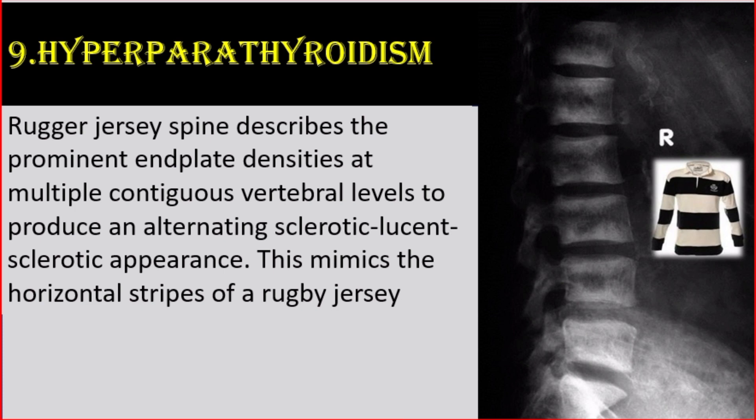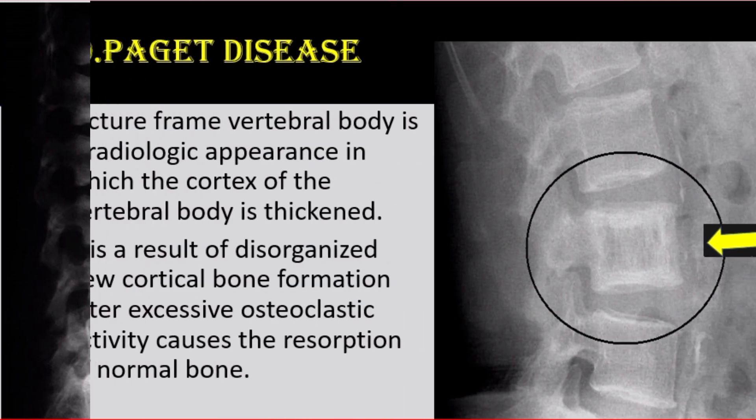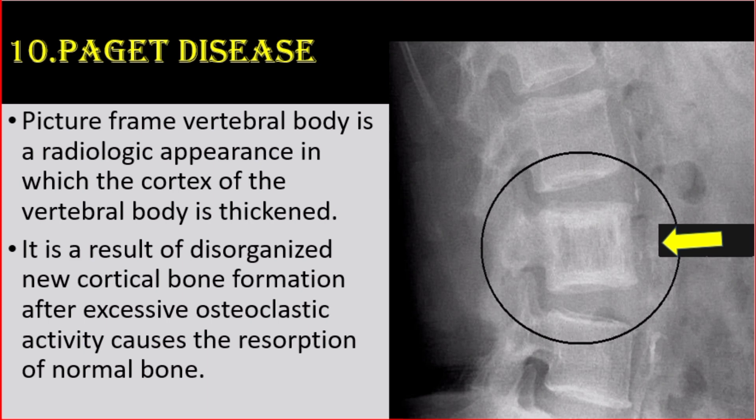Number 9: Hyperparathyroidism. Rugger jersey spine describes prominent end-plate densities at multiple contiguous vertebral levels, producing an alternating sclerotic-lucent-sclerotic appearance. This mimics the horizontal stripes of a rugby jersey. Number 10: Paget's disease. Picture frame vertebral body is a radiologic appearance in which the cortex of the vertebral body is thickened. It results from disorganized new cortical bone formation after excessive osteoclastic activity causes resorption of normal bone.